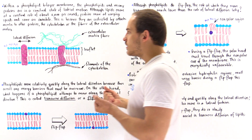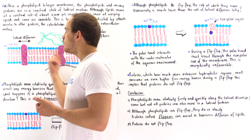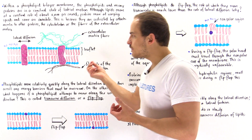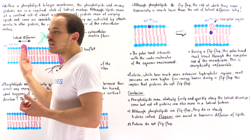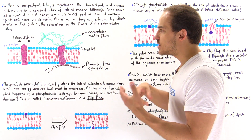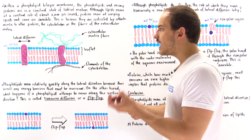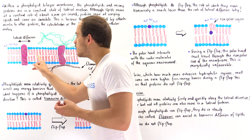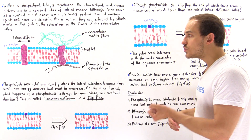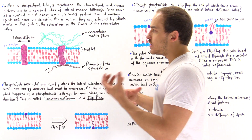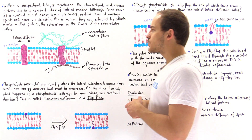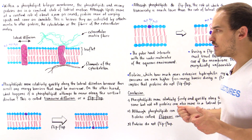What allows these phospholipids to actually move along the lateral direction? As a phospholipid moves along laterally, the bonds between the water molecules and the polar heads remain intact. Likewise, the bonds between the adjacent hydrocarbon non-polar tails also remain. So there's really not too much energy that must be overcome as these phospholipids move along any given leaflet.